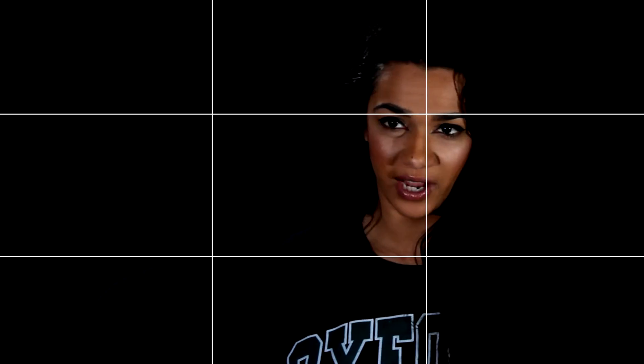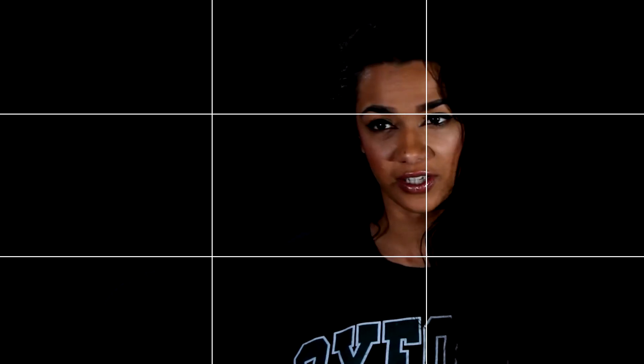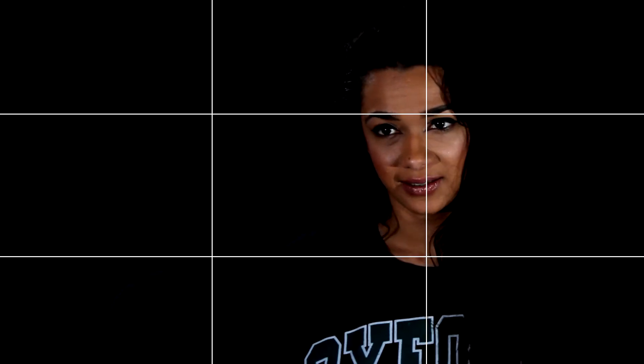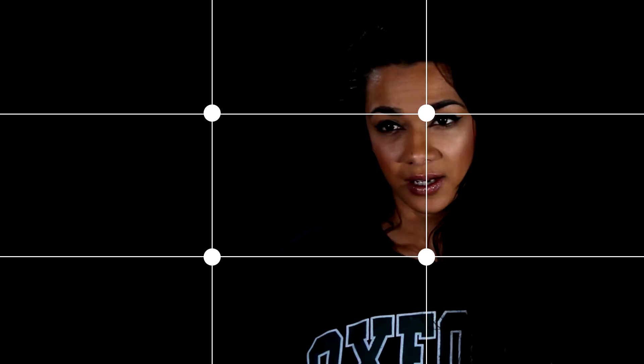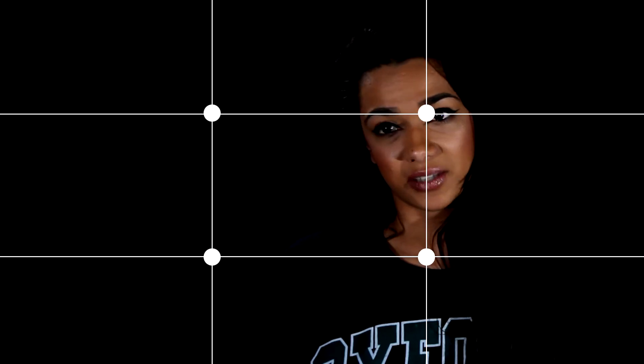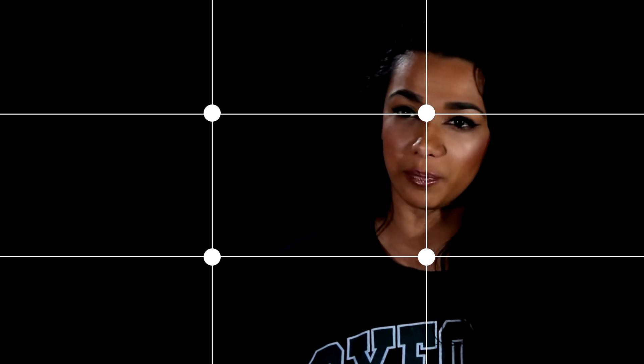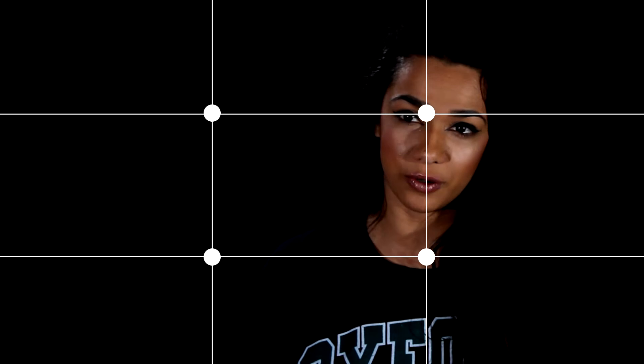Firstly, you will need to know about the rule of thirds. Typically you will place your subject on the intersecting points. You want to move your camera where the two lines will meet. The subject does not need to be directly on the points, but somewhere near this will give your shot a pleasing and balanced composition.